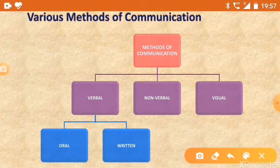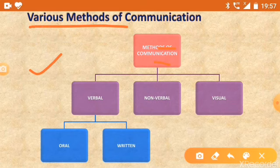Before starting our topic, firstly we have to understand this chart. In this chart we will discuss about the methods of communication, because in this chapter we have to discuss the various methods of communication. There are three types of communication: first is verbal communication, second is non-verbal communication, and third is visual communication.